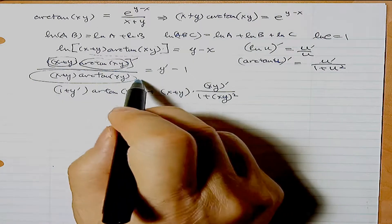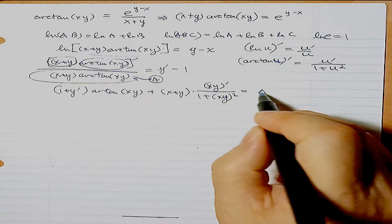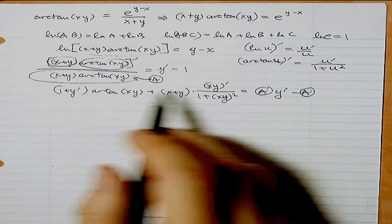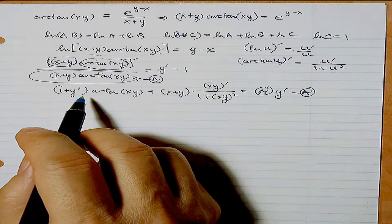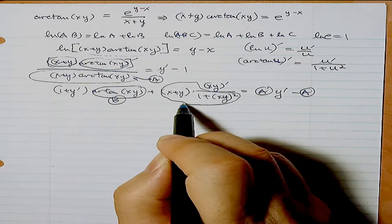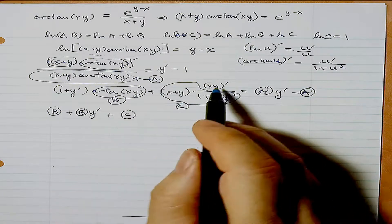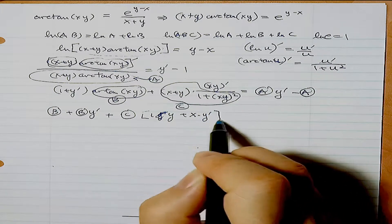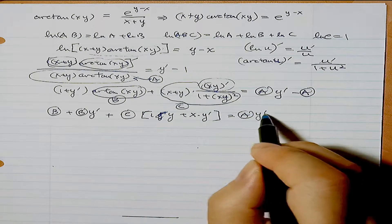Instead of writing all that out, let me call the denominator 'circle a' — that's (x+y) arctan(xy). That will multiply by (y' - 1), giving a·y' - a. Now I notice there's a y' here. Let me call arctan(xy) as 'b', and the arctan derivative expression as 'c'. Expanding: b + b·y' + c·(y + x·y') = a·y' - a.